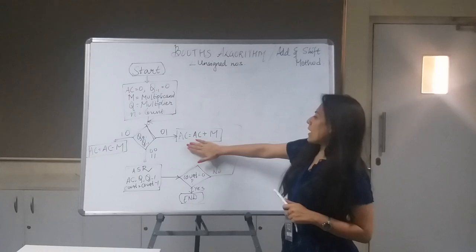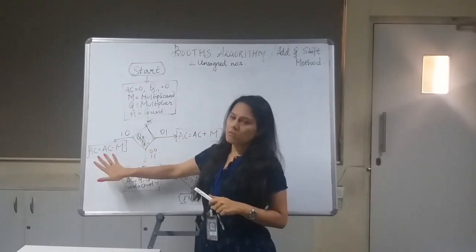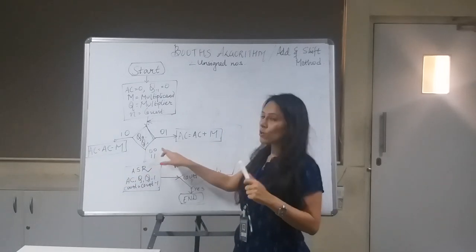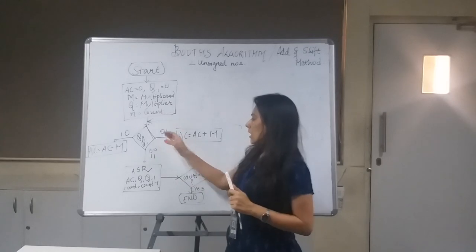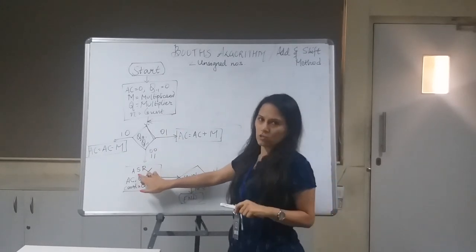If these two are zero and one, then AC is AC plus M. If it is one and zero, then we do AC equals AC minus M. And if it is zero zero or one one, then we do directly ASR, this is arithmetic right shift.